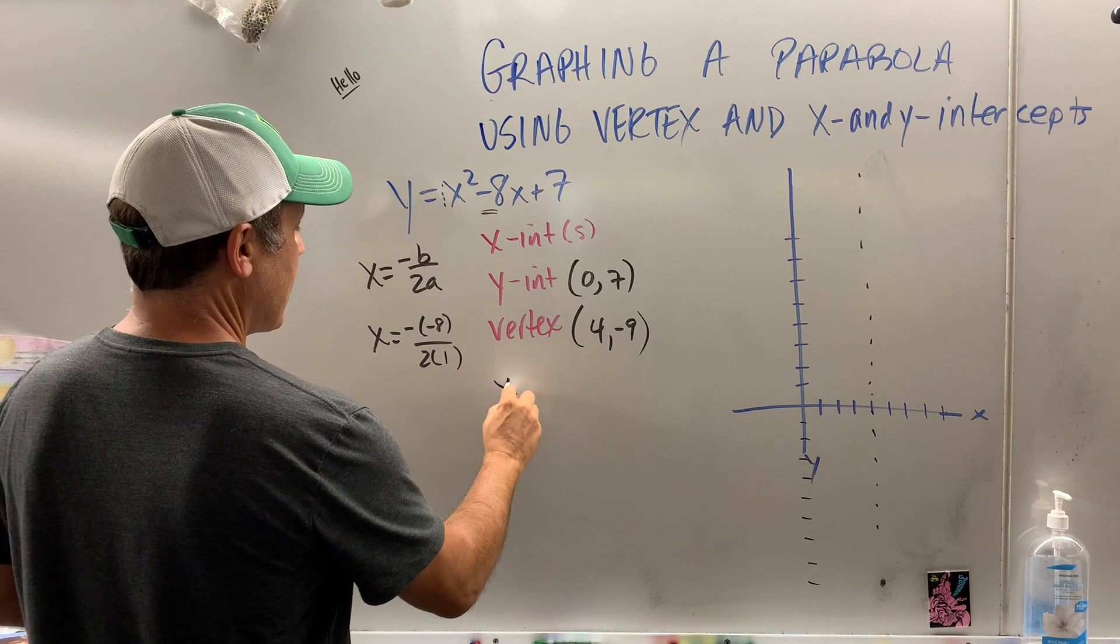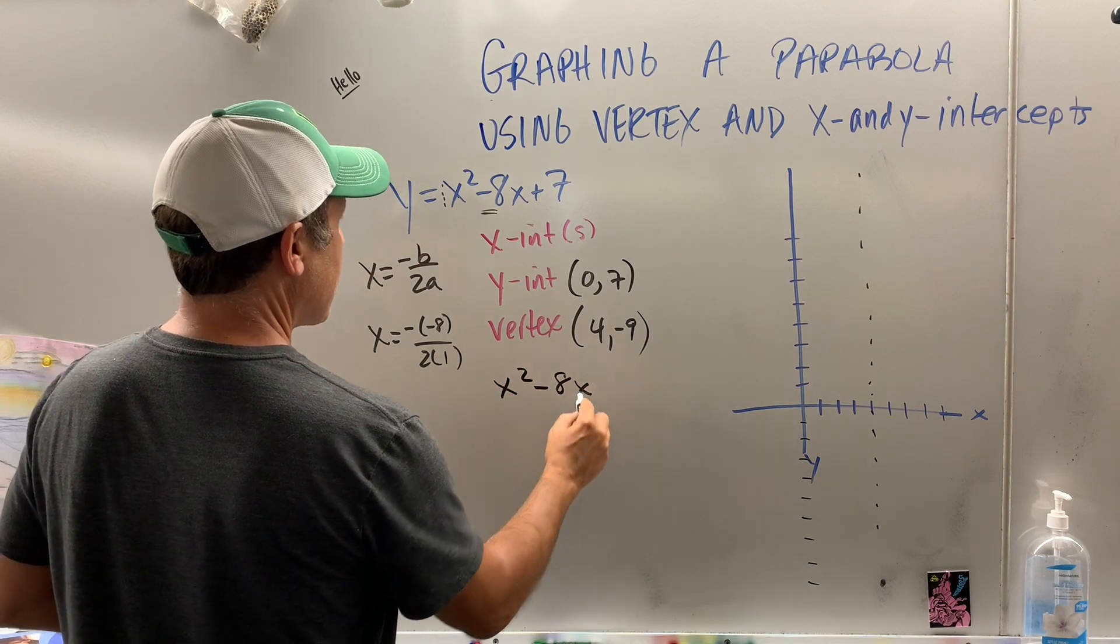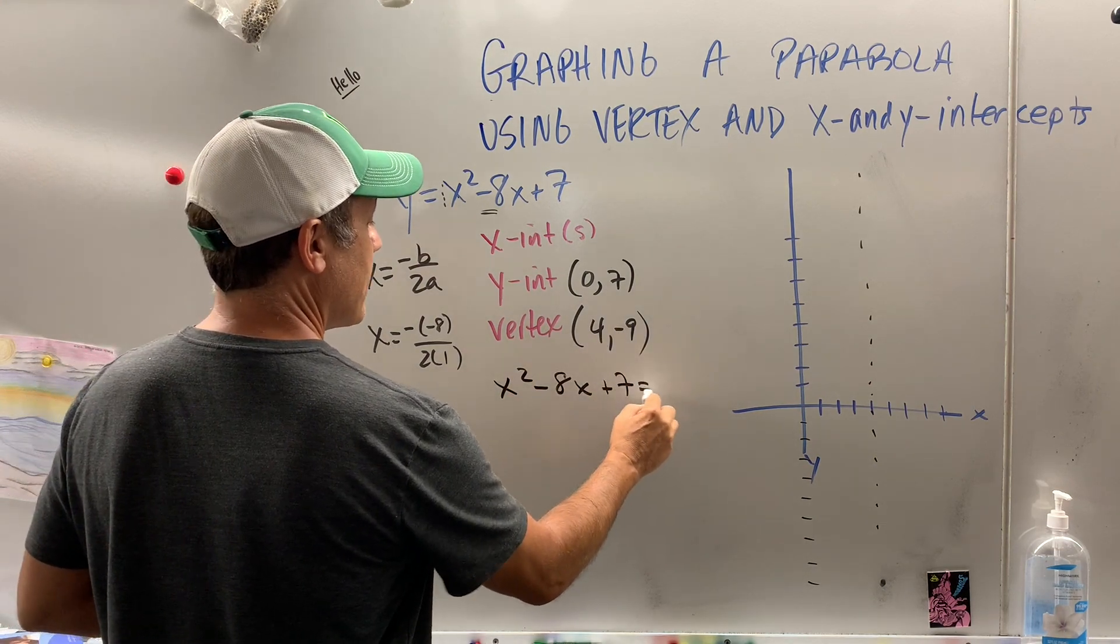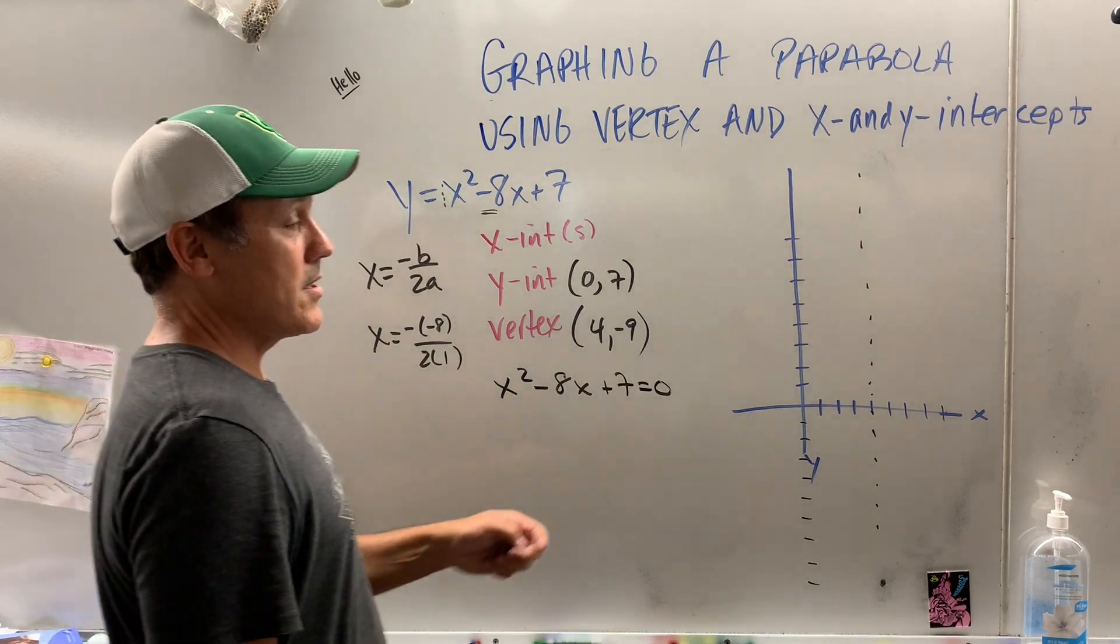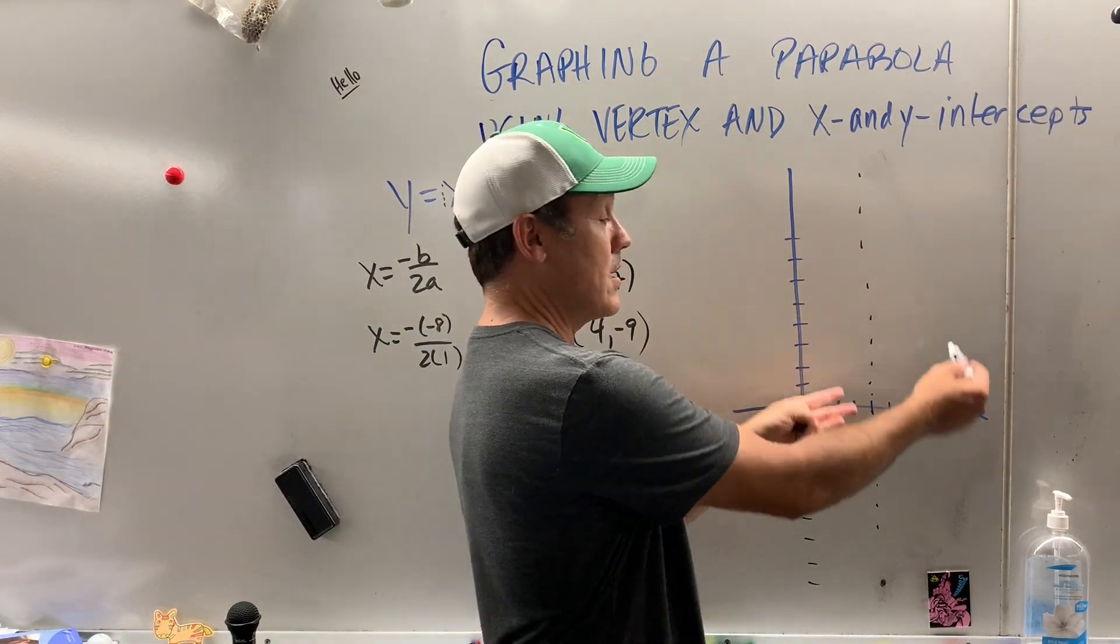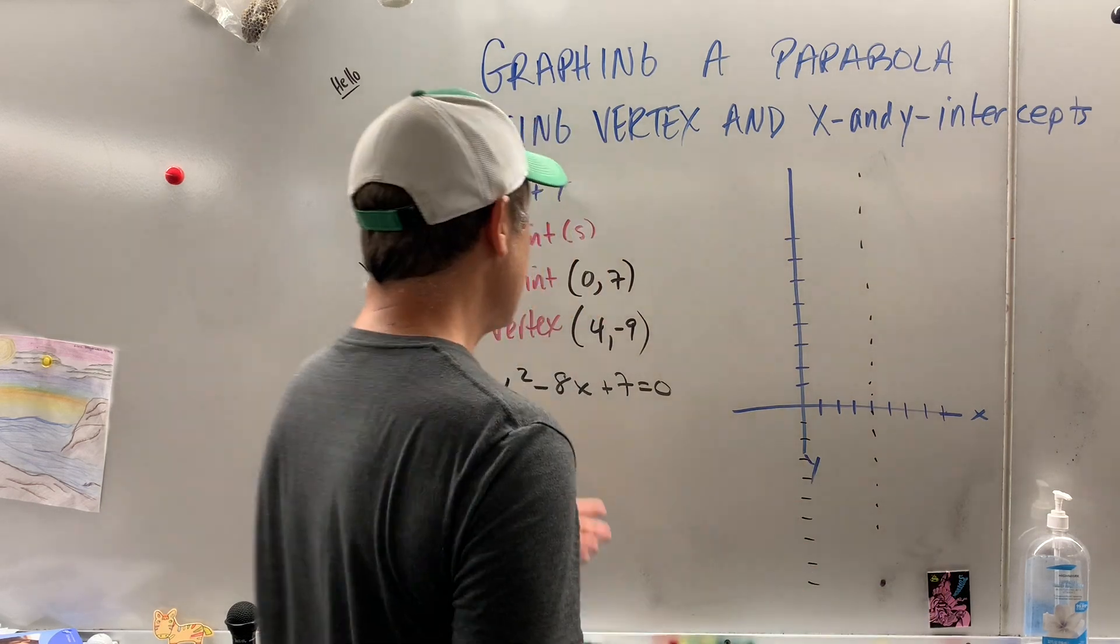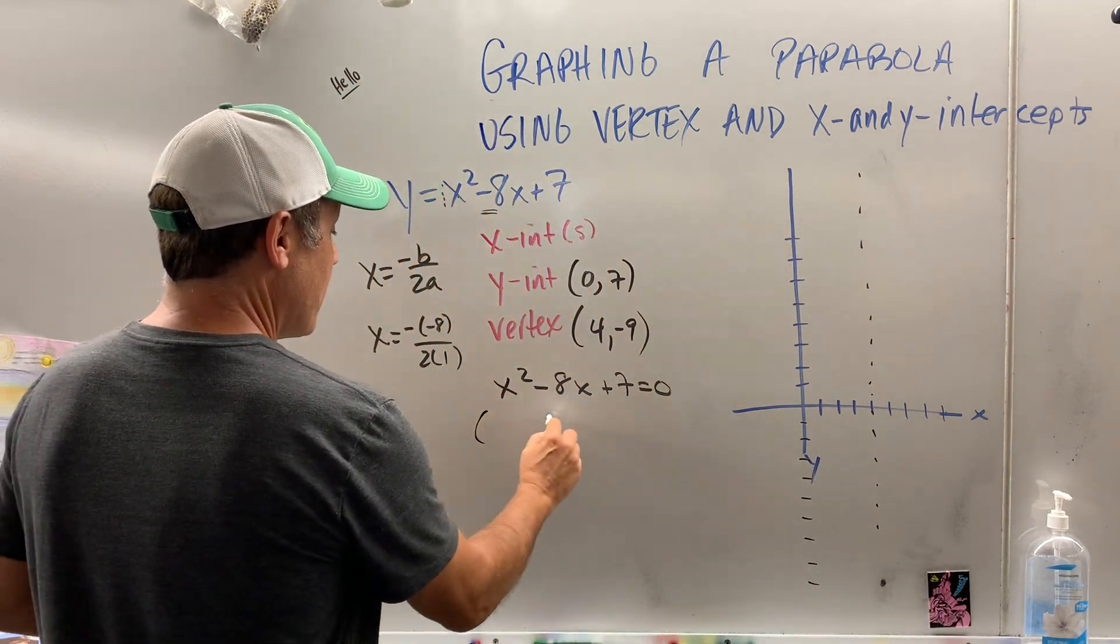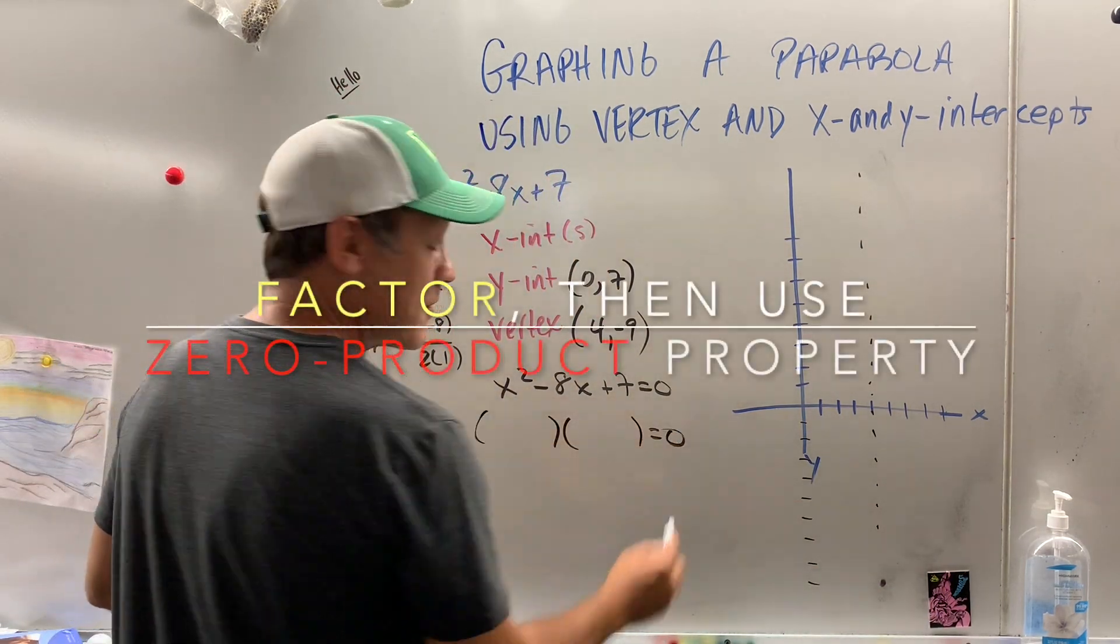Here is how you find the x-intercepts. You take x squared minus 8x plus 7, and set equal to 0. Because think about it, when it hits the x-axis, the y value is 0. It's not moving up or down anywhere. So to do that, you factor, and this is why factoring is so important.